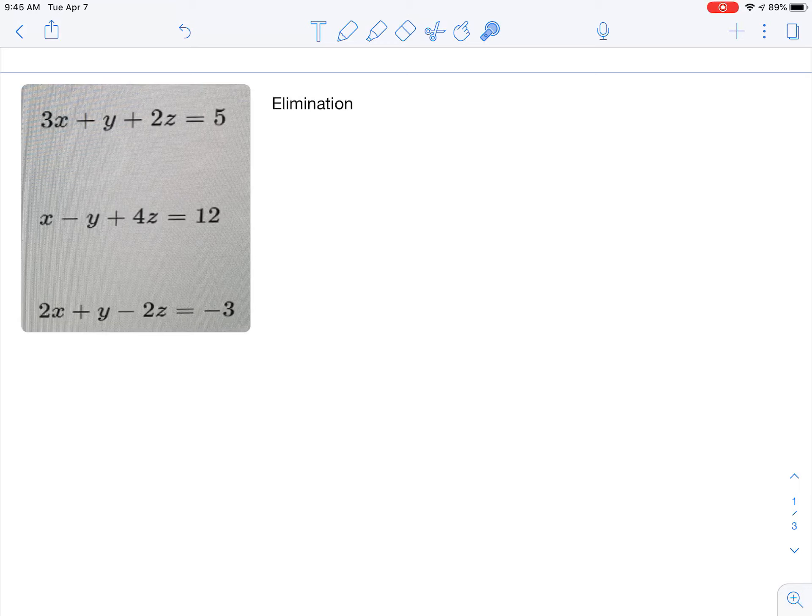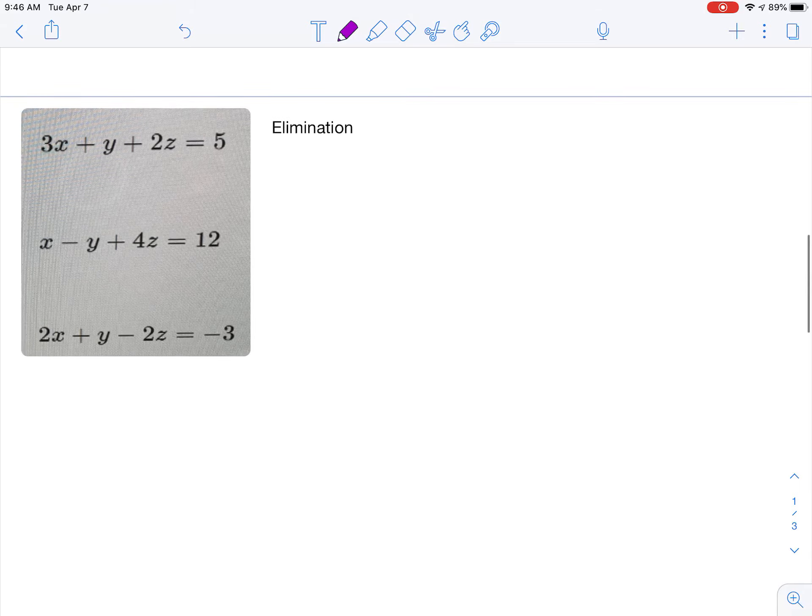In this problem the easiest one to eliminate is going to be the y's. I noticed that the y's have the same coefficient and I could easily eliminate them. But that's almost exactly what happened in the Khan Academy video that you first watched. I'm going to just make it a little more interesting because sometimes you'll have to do this. So I'm instead going to eliminate the z's. It's a little bit more work but again it's just to make the point that sometimes that's what you have to do.